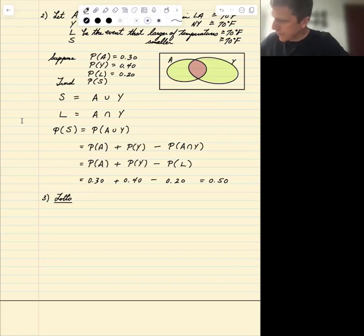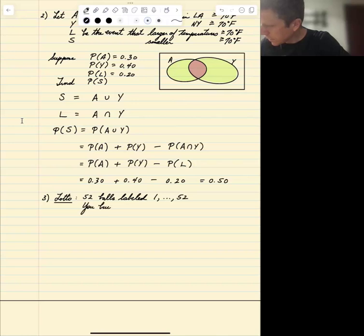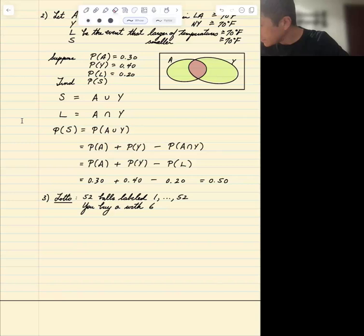Alright, so in this example, 52 balls are labeled one through 52, so each ball has a different label. And we're going to buy a ticket with six numbers. Sorry, yeah, so each ticket has six numbers, distinct.